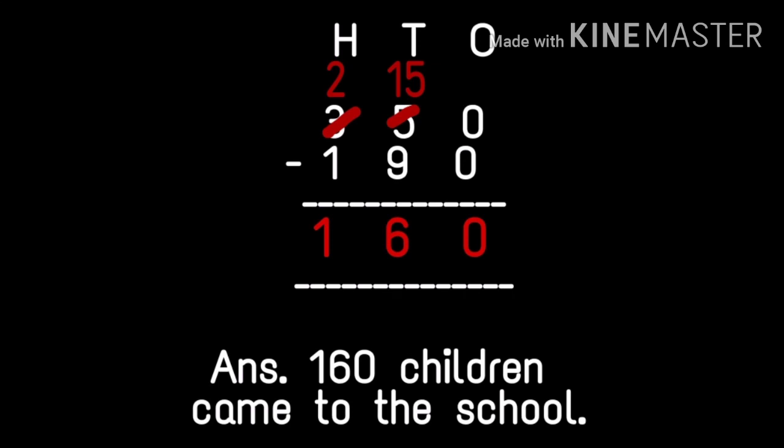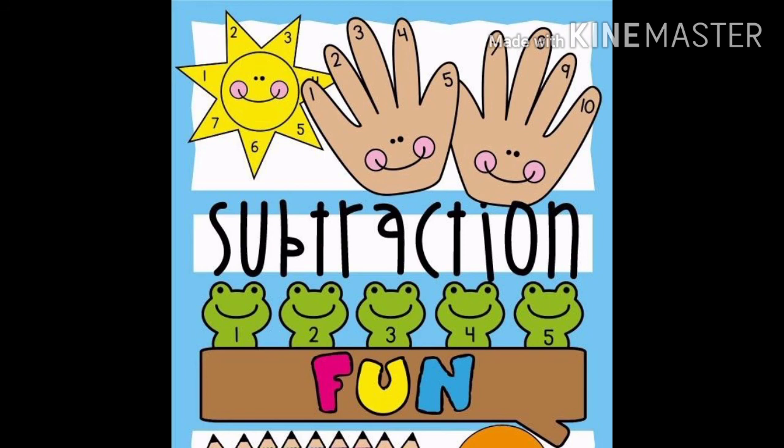We will subtract 350 minus 190. Ones digit: zero minus zero is equal to zero. Tens column: five minus nine — can we subtract nine from five? No. So we take a borrow from the hundreds column — three becomes two, and five becomes fifteen. Fifteen minus nine is equal to six. Hundreds digit: two minus one is equal to one. The difference is 160, so 160 children came to school.